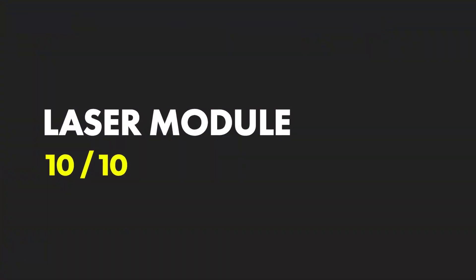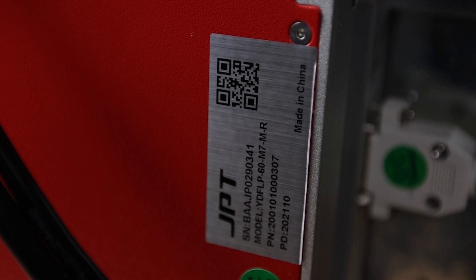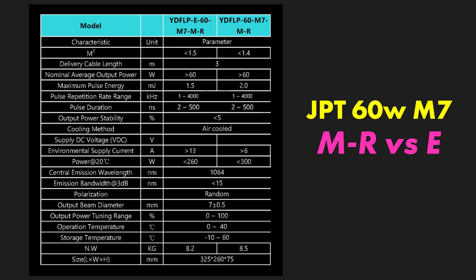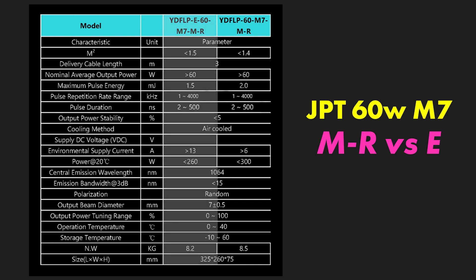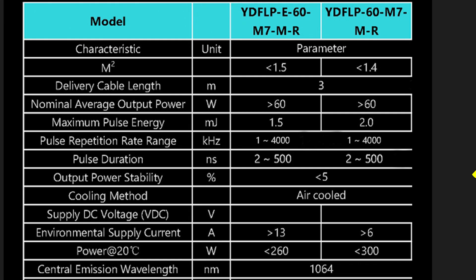One of the absolute best things about this unit is the source itself. Many people don't know this, but there are actually two models of the JPT 60W M7. You have the full power 60M7M-R, and the lower powered budget version, the E60M7M-R. The stats are nearly identical, but there is one key difference, the pulse output power. The full power model comes in at a whopping 2 mJ pulse power, where the budget E version sits at 1.5 mJ per pulse.